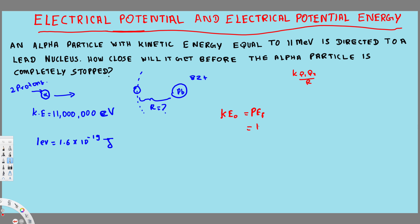The potential energy equals k times q of Pb times q of the alpha particle divided by the distance r, and that equals the kinetic energy. Solving for r, we flip it around: r = k·q_Pb·q_alpha / KE₀.